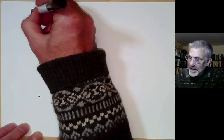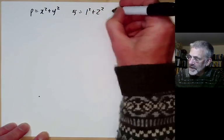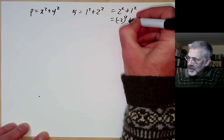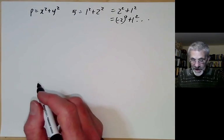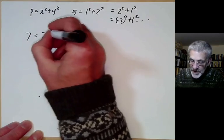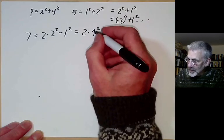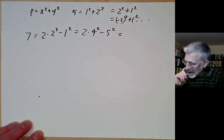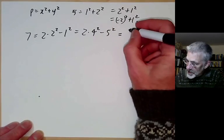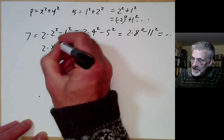A warning: when we looked at numbers as a sum of two squares, the solution was essentially unique — for instance, 5 = 1² + 2², and the only variations were changes of sign or order. However, if we're representing a number using an indefinite form, there can be many different ways. For example, 7 = 2·2² − 1², but we can also write 7 = 2·4² − 5², and also 7 = 2·8² − 11². So there are lots and lots of different ways of writing 7 as 2x² − y².